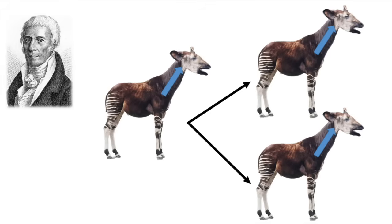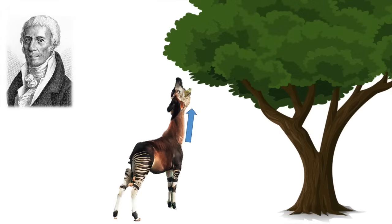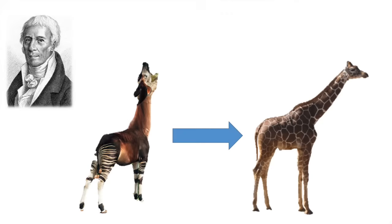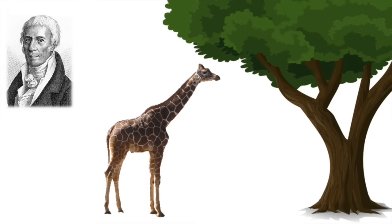This is an acquired characteristic, not a genetic characteristic. So then over many, many years, the okapi would stretch its neck to reach the leaves on taller trees and the neck would get longer and longer. Until the okapi resembled a giraffe and speciation took place. Now the neck is so long that Lamarck would suggest that the okapi is no longer an okapi but a giraffe.